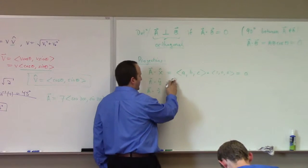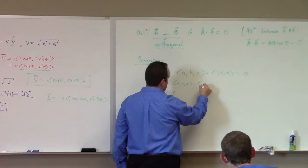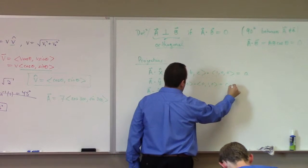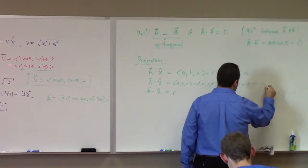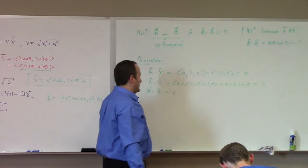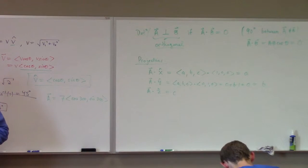So, I'll work it out here. This would be a, b, c dot zero, one, zero. So, I get zero plus b times one plus zero, which is b. I don't want this to be like, this isn't something you need to memorize. It's something you should understand, okay?